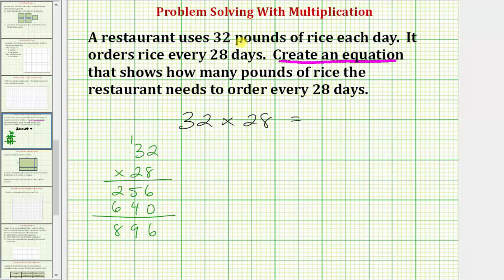So our complete equation that shows how many pounds of rice the restaurant must order every 28 days is 32 times 28 is equal to 896. This would be the equation that we must enter for this problem. Be careful not to just enter the answer of 896 because that would be marked incorrect. I hope you found this helpful.